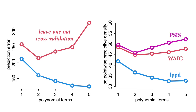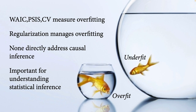Both PSIS and WAIC try to estimate the out-of-sample accuracy of a model by measuring the penalty and adding it to the in-sample fit. In most cases they give the same answer. On the right I show how PSIS (the purple curve) and WAIC (the new red curve) do in estimating the leave-one-out cross-validation score — they don't get it exactly right but they get the trend right and the correct inflection point. Selecting a model based on PSIS would give you the quadratic model again.